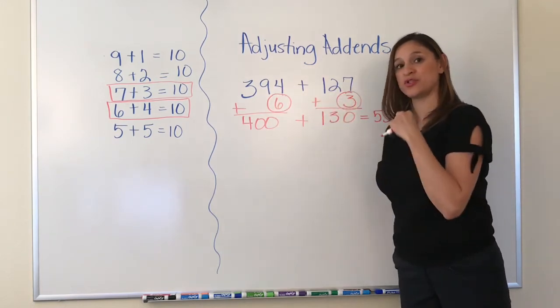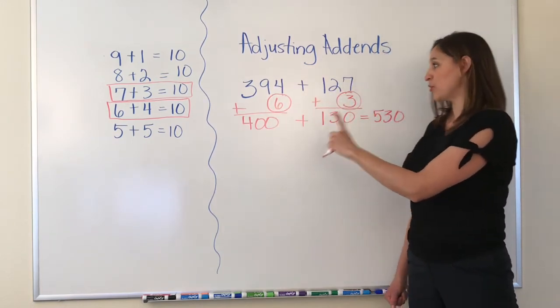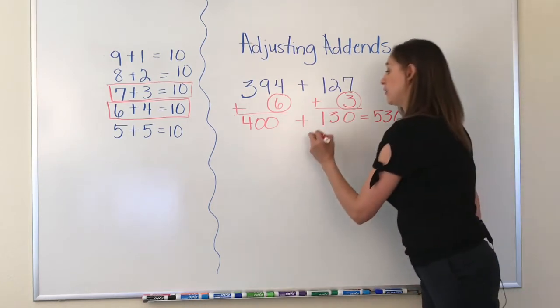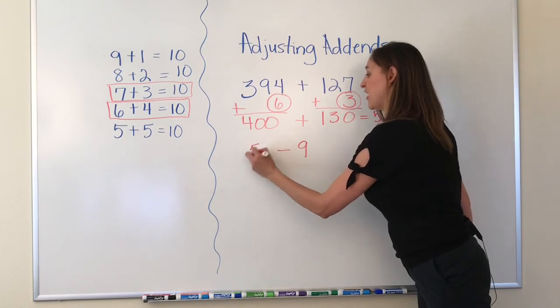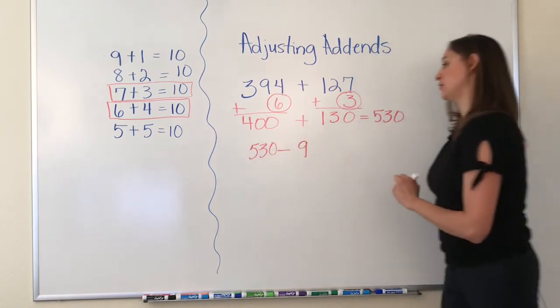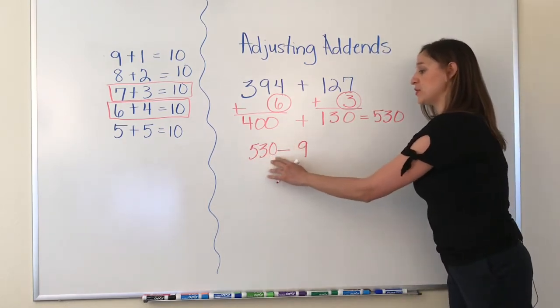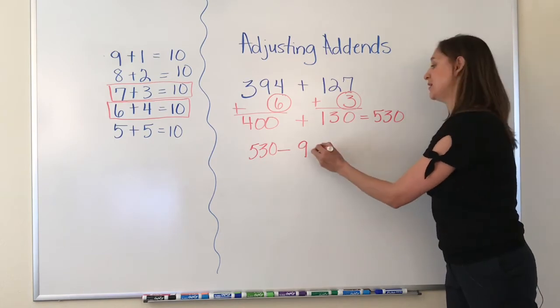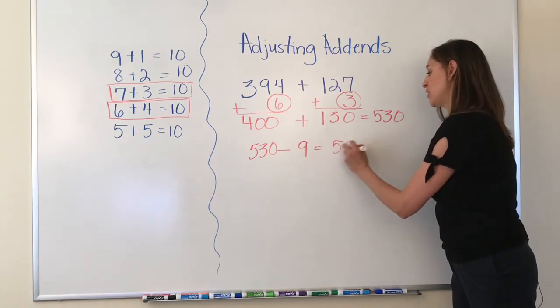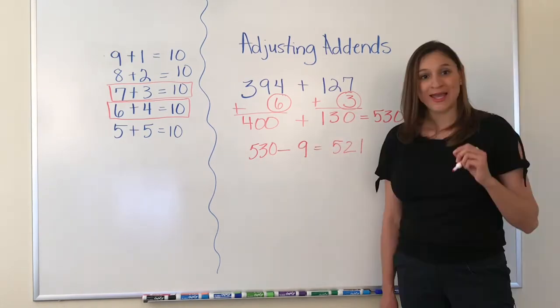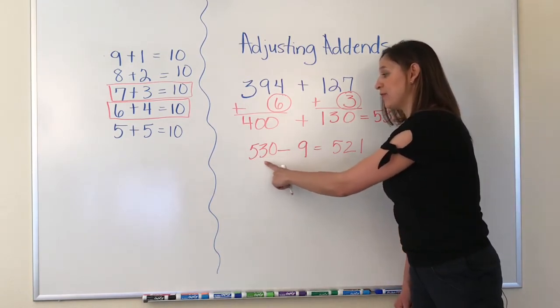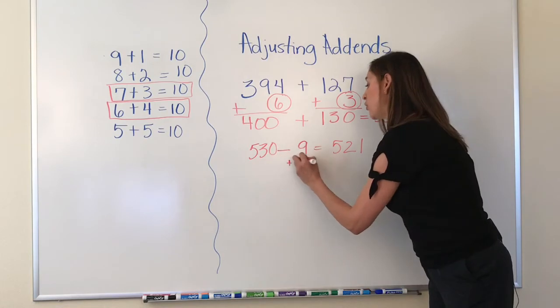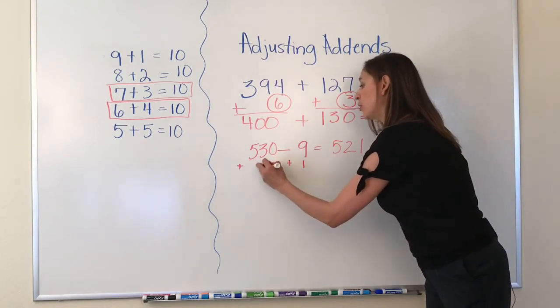400 plus 130 gives me the sum of 530. Now I will get the sum of the numbers I used to adjust both addends, which is 9, and I will subtract that from 530. So 530 minus 9 is 521.